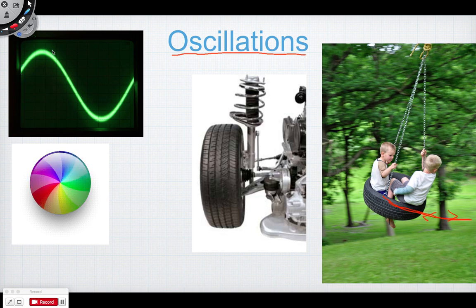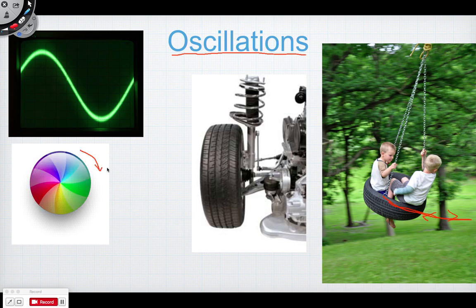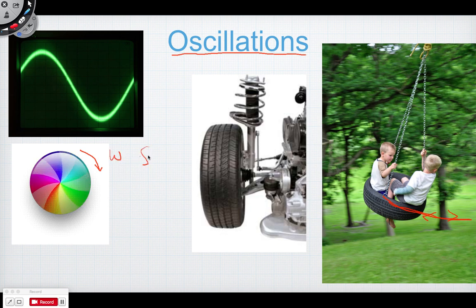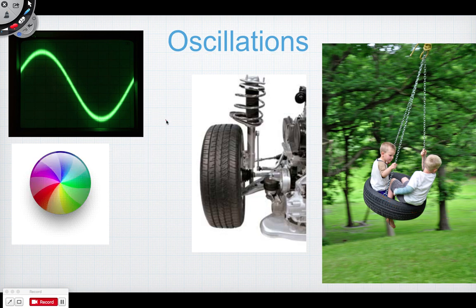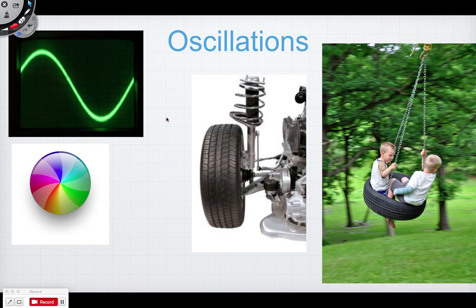These things end up being sinusoidal in nature, and we'll eventually get to that sine equation and the wave equation you would have learned from trig. We also have things that repeat patterns like spinning, and this is going to link our discussions of angular velocity and frequency together. Repetitive motion on the same path can be described as an oscillation.